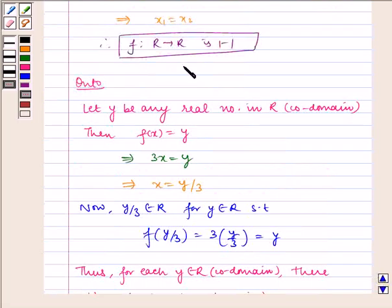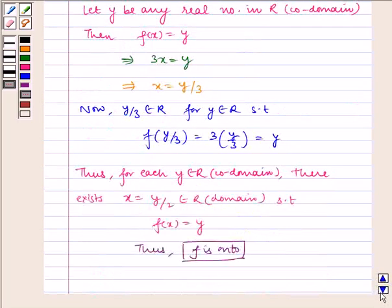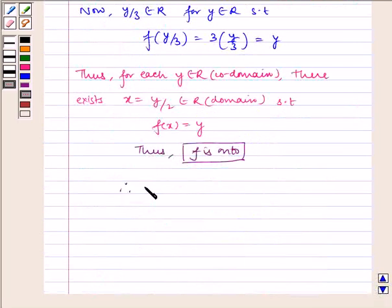Now, f is one-one and f is onto. Therefore, f is a bijective function.